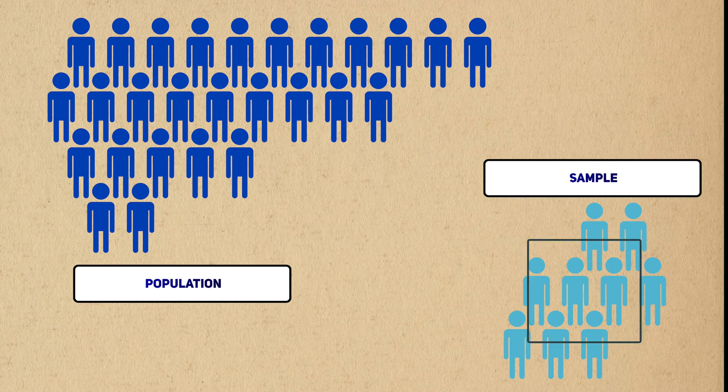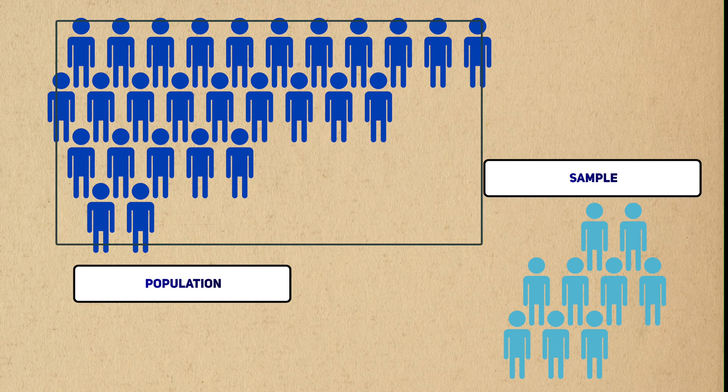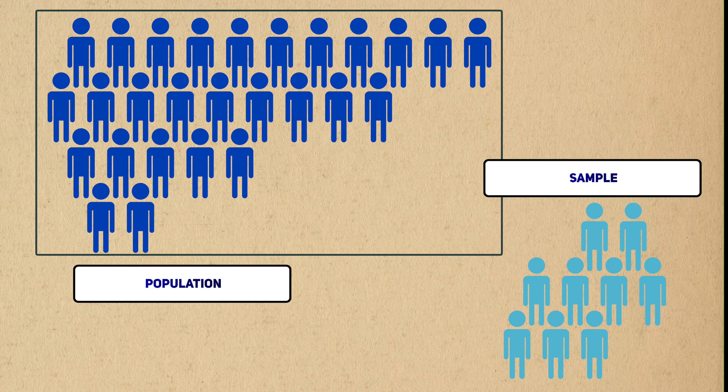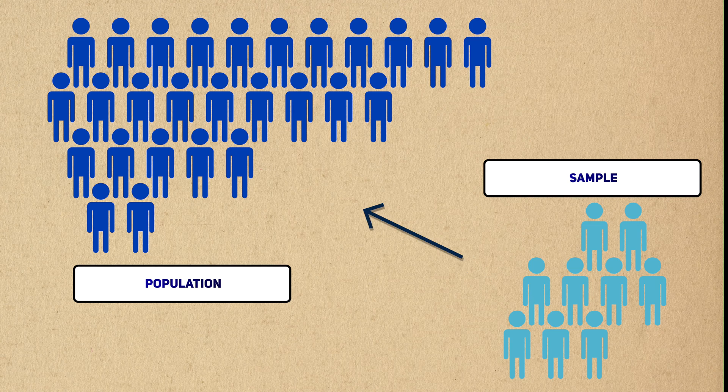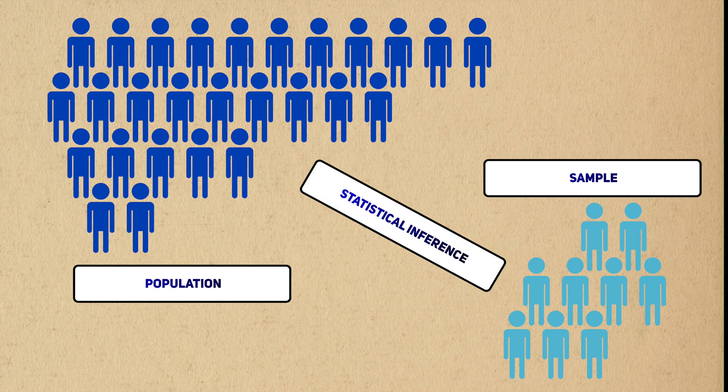Intuitively, if we can learn something from the smaller sample, then what we learn shouldn't be too far off from the population they come from. Statistics lets us make this connection, and this is the task of statistical inference.